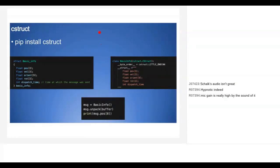I found this amazing Python library called cstruct. Basically how it works is you take a C++ struct, put it in the class definition as a long string, and then you can unpack the buffer and access the different members of it. We were quite happy with that.